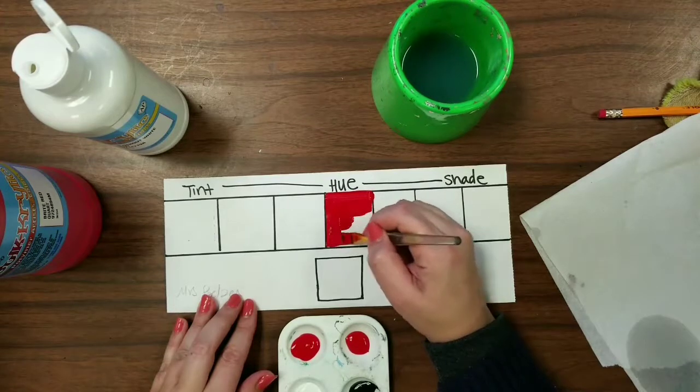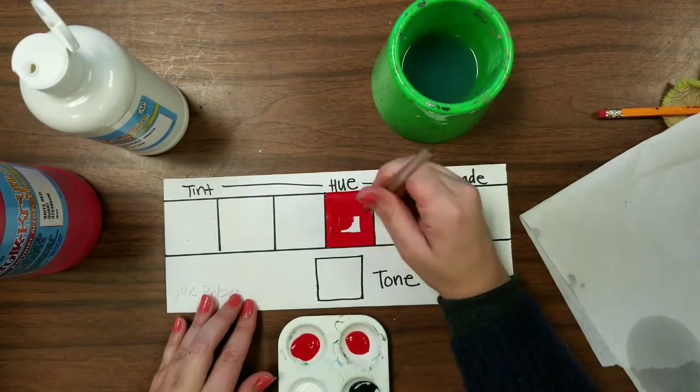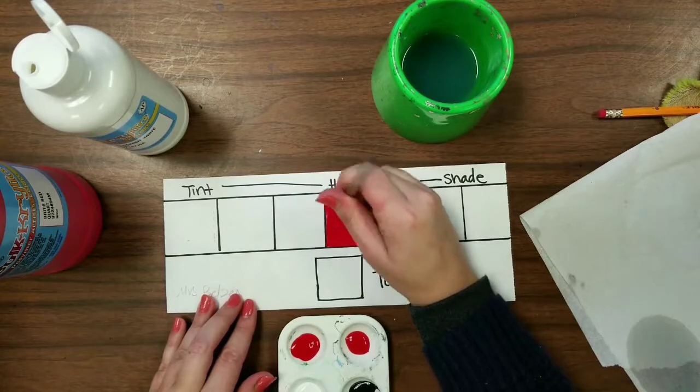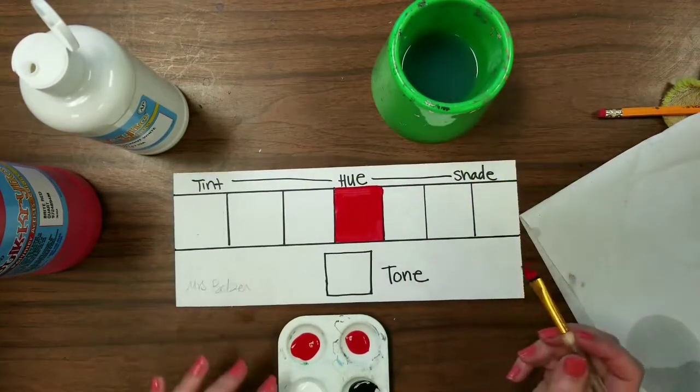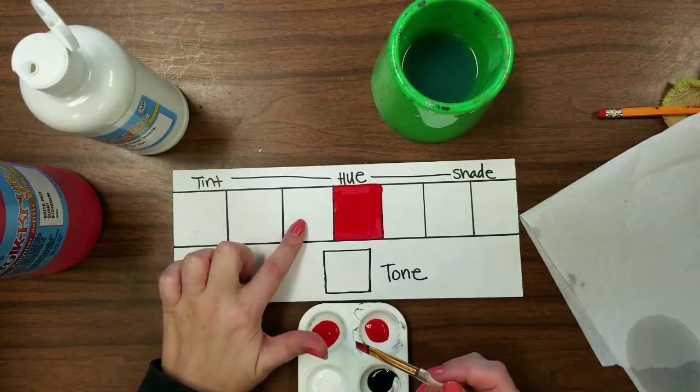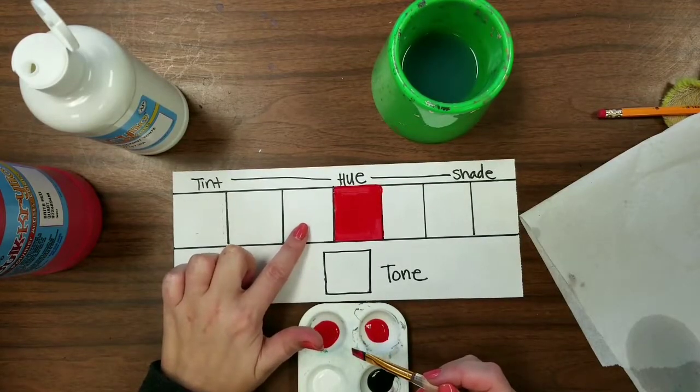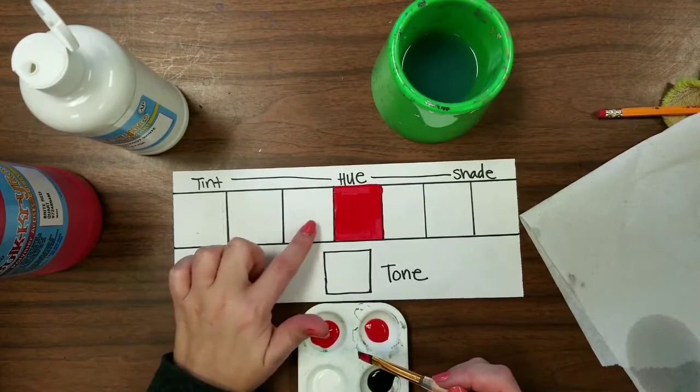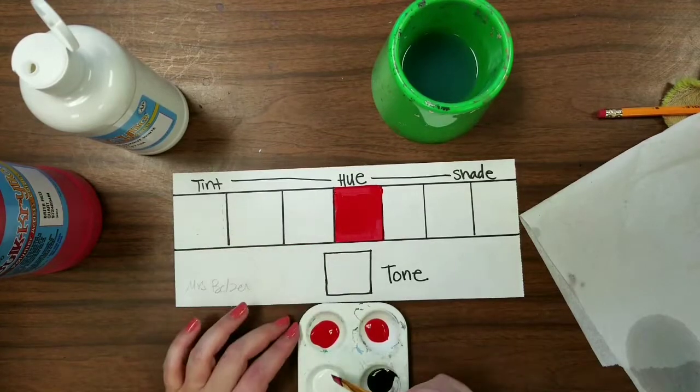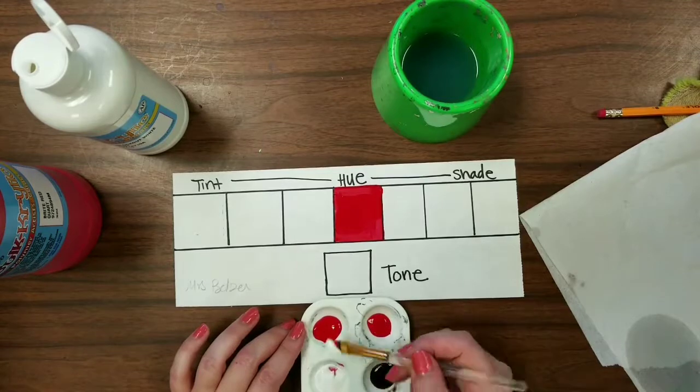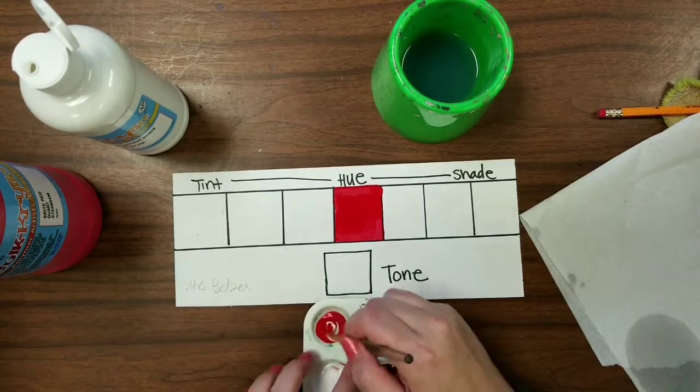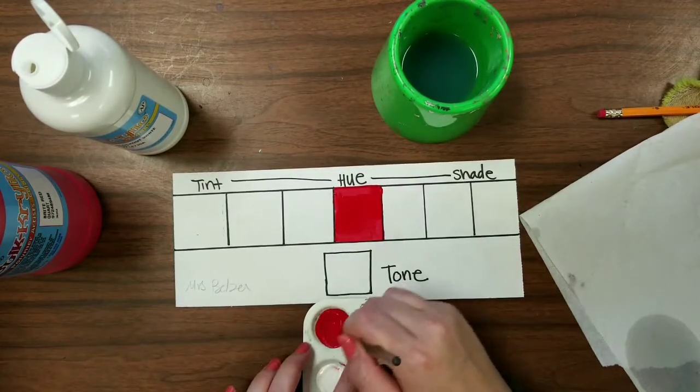I like to do the tint side first because it helps to keep the water and the brush a little cleaner. Whenever you're adding black, it gets a little tricky to start rinsing things out. So to do this tint, which is going to be the darker of the tints, the one that's closer to red, you're going to grab a dab of the white and mix it in with your red. And it should start to lighten.